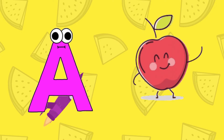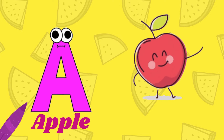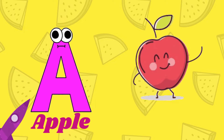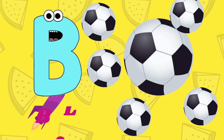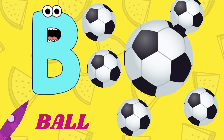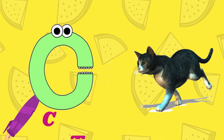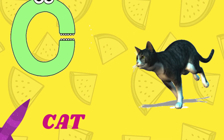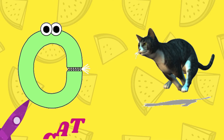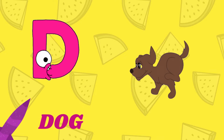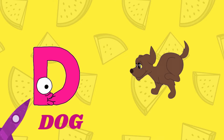A is for Apple, A-A-Apple. B is for Ball, B-B-Ball. C is for Cat, C-C-Cat. D is for Doll, D-D-Doll.